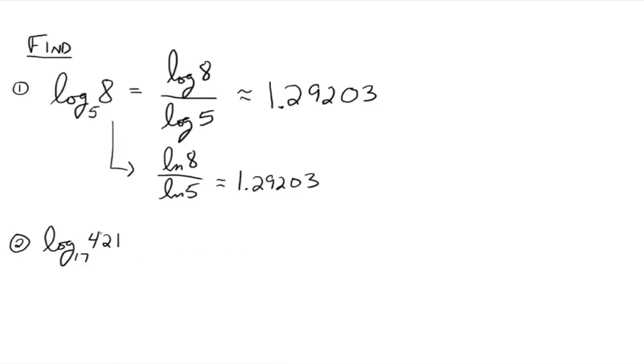All right, so what about this last one? Do this last one real quick. So let's get the log of 421 over the natural log of 17, which goes to 2.1328. And we get something like that.